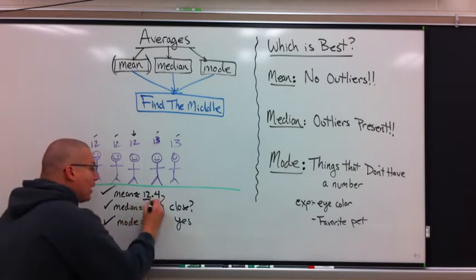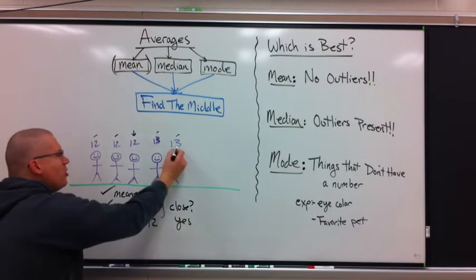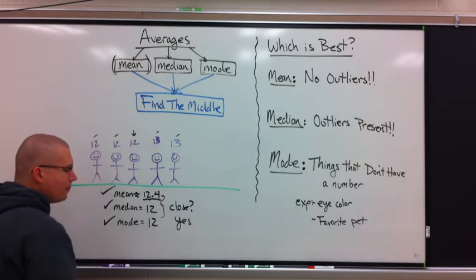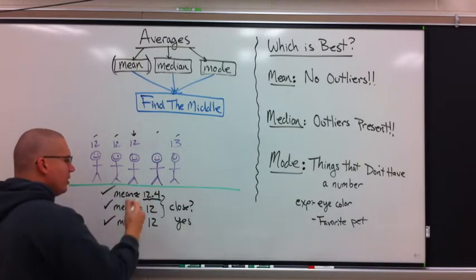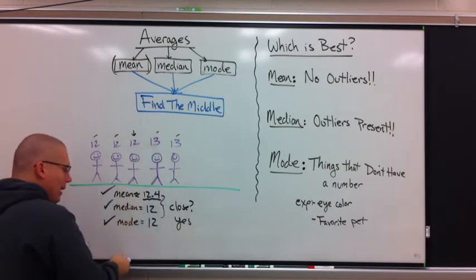People say, this one's more accurate because I used all the numbers. In the median, didn't you use all five numbers? It's the same concept. You still used them all. Now I want you to watch what happens. Here's the difference that starts separating which average works best and when.